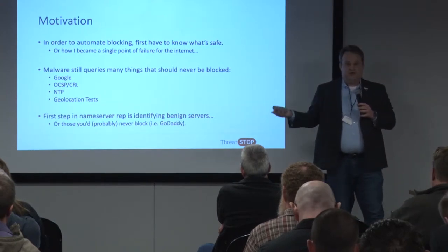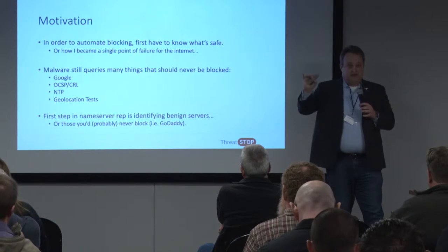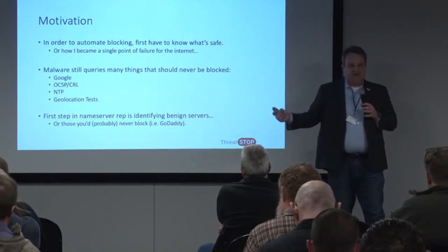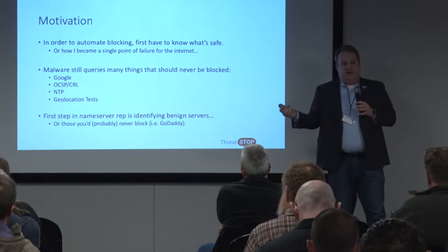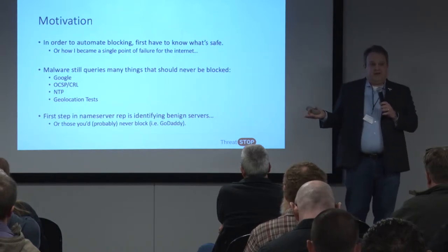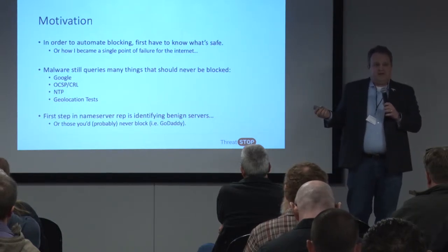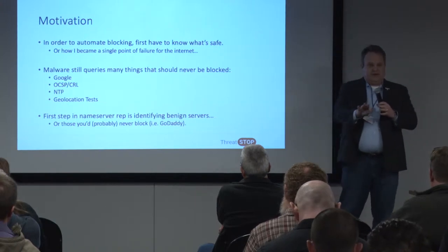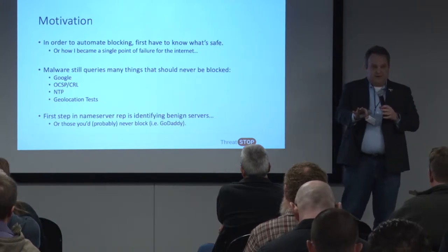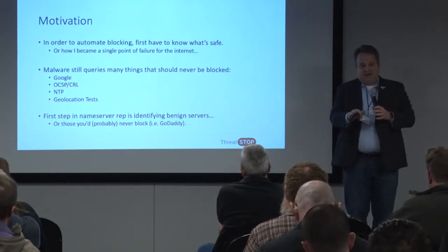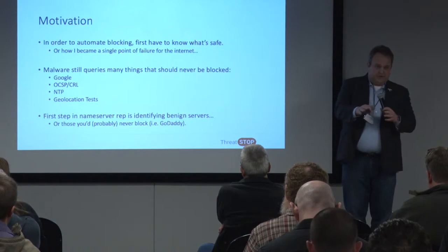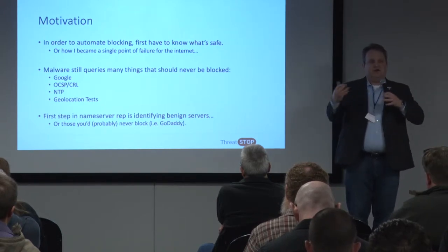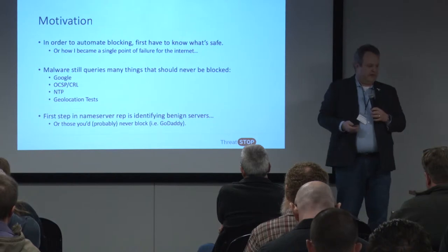To block at the authoritative name server level, the first thing is identifying benign servers. As far as I know, no one's done anything like that. So I said, how can I do this programmatically? Obviously, there's doing it on the microeconomic scale — I'm organization A, here are my authoritative resolvers, here are the authoritative resolvers of my partners — but how do I do that in a globally representative way? I don't recommend you use my DGAs and take those name servers, and we'll talk about how that can go spectacularly wrong.